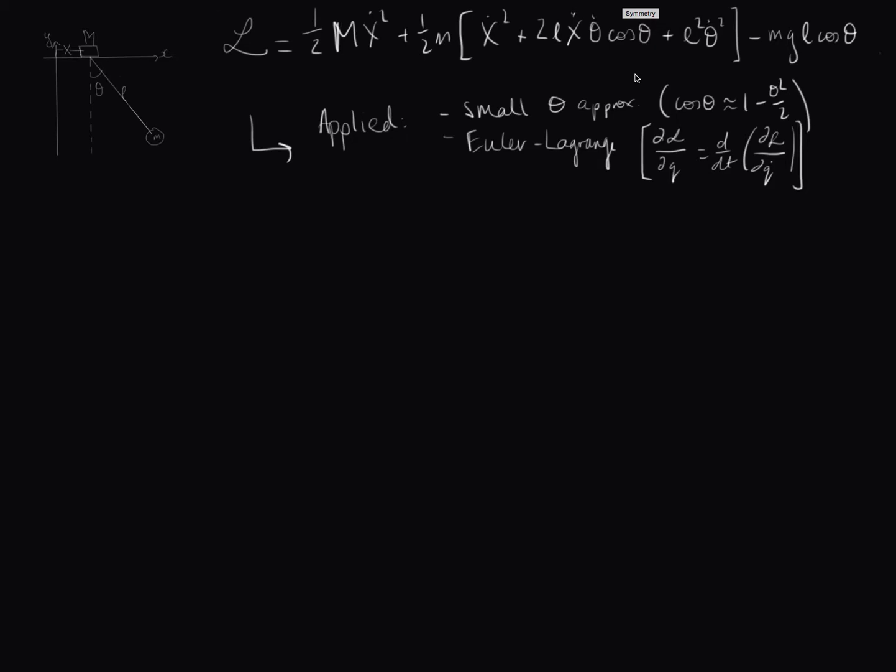And so then from there, we can use simultaneous equations to solve it. So we end up with theta double dot is equal to negative g times m plus m all over big M times L times theta. So I don't know how familiar this will look to you. At first, you might think that it's not familiar at all.